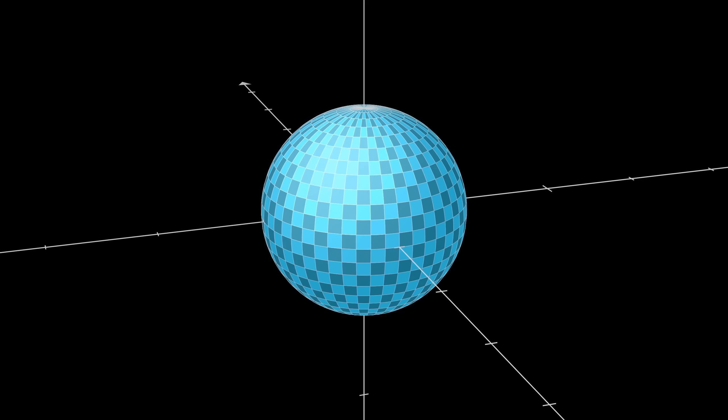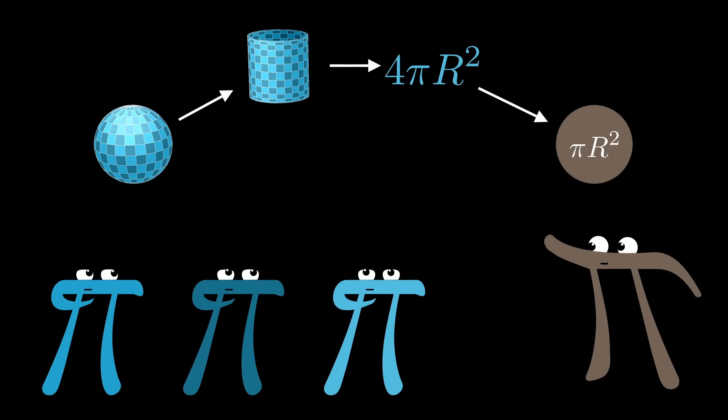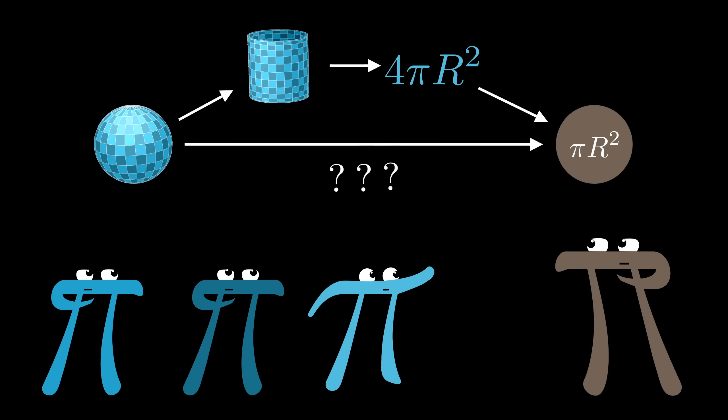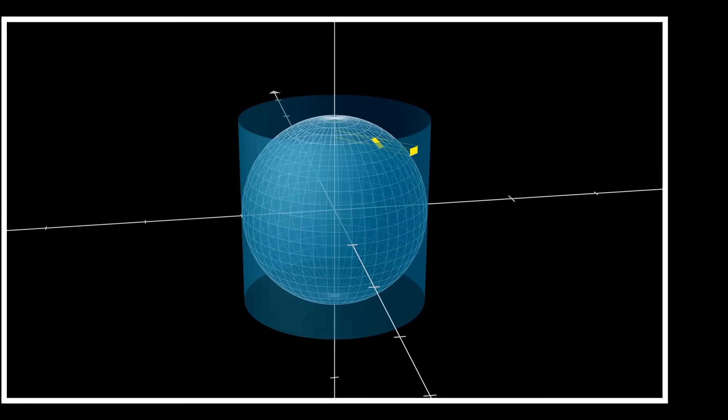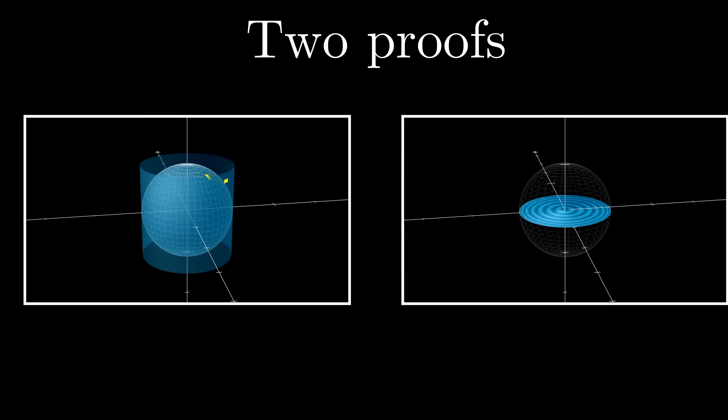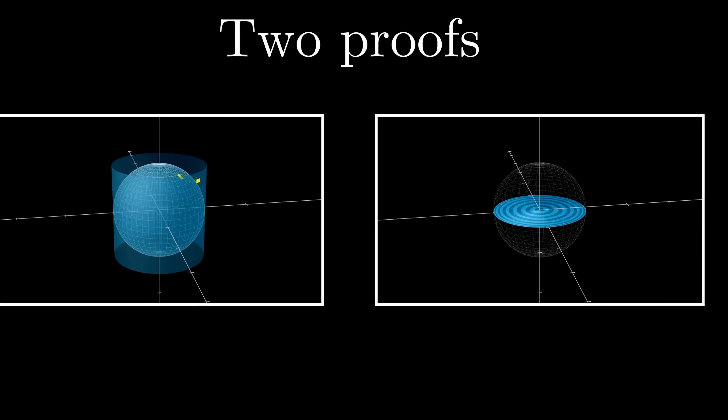Now that's pretty satisfying, but you might nevertheless be wondering if there's some way to relate this sphere directly to a circle with the same radius, rather than going through this intermediary of a cylinder. I do have a proof for you to this effect, leveraging a little trigonometry, though I have to admit I still think the comparison to the cylinder wins out on raw elegance.